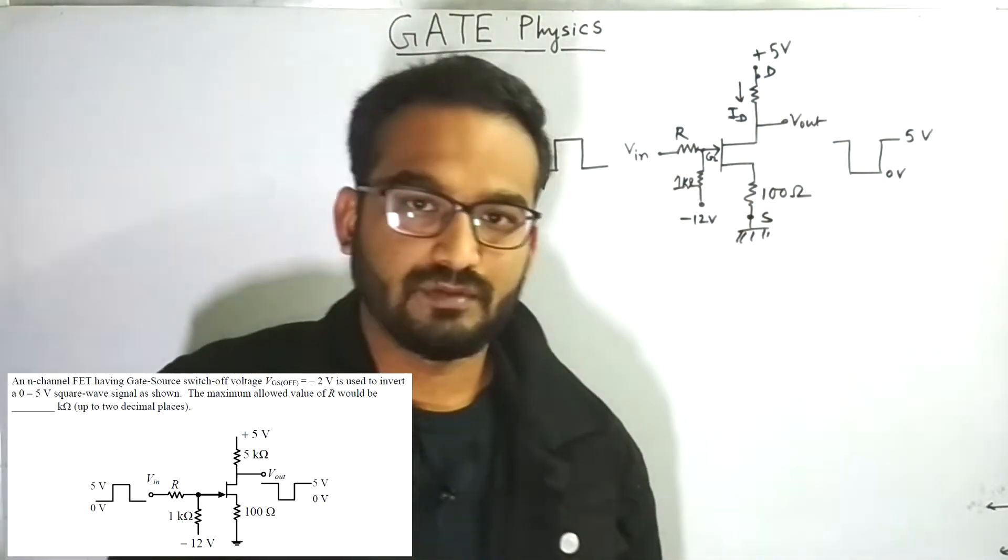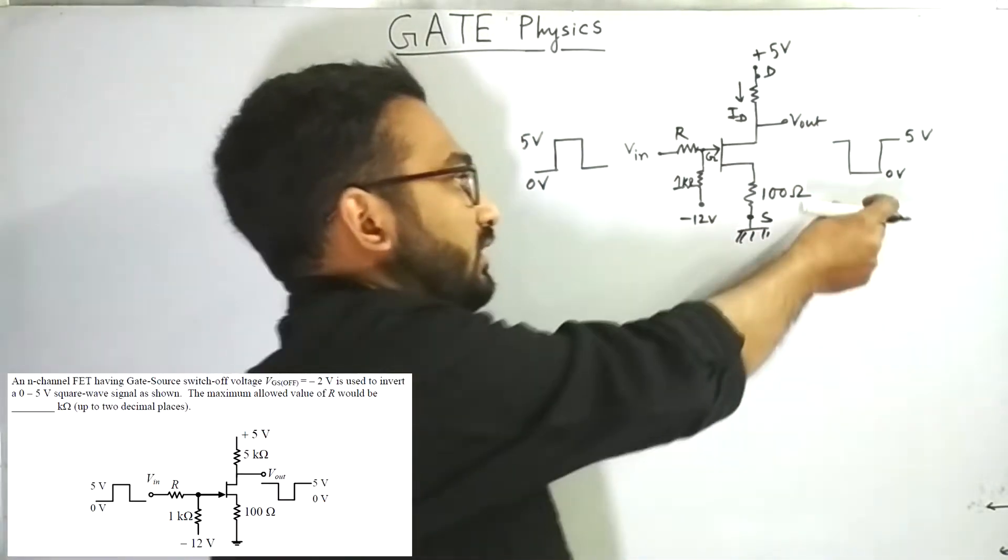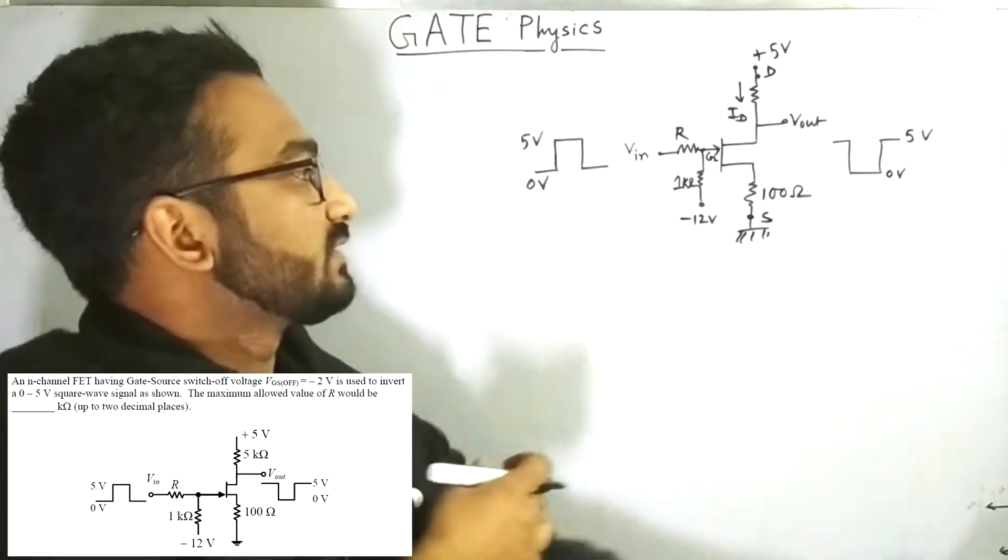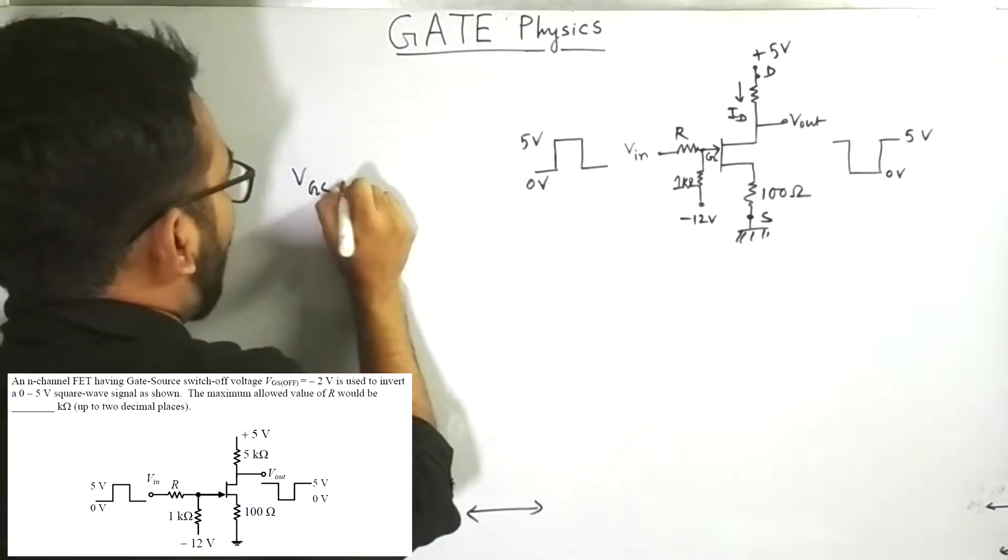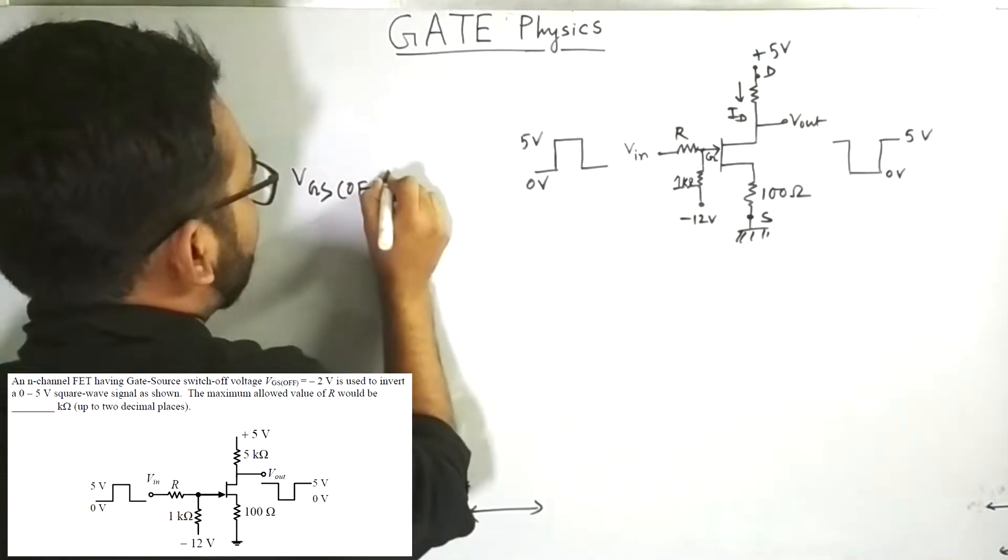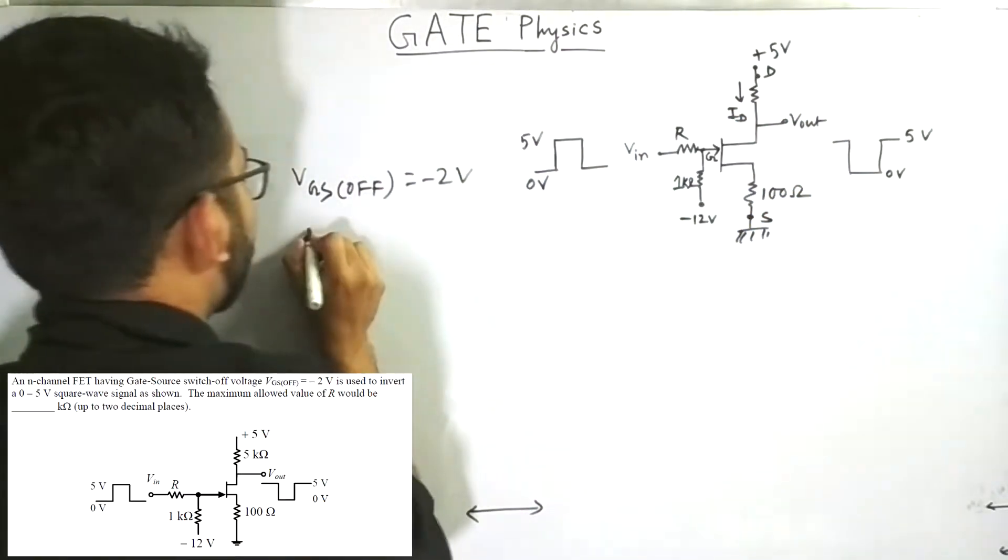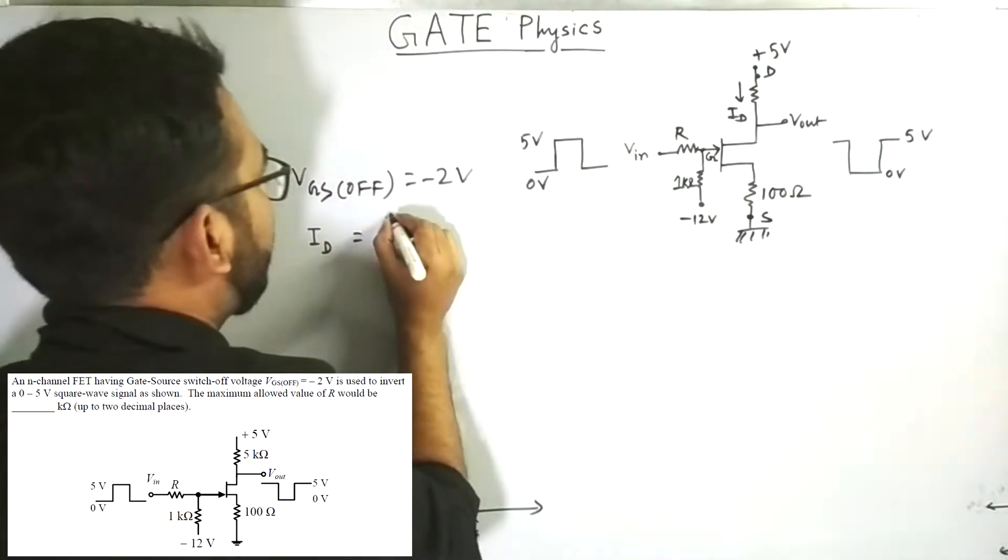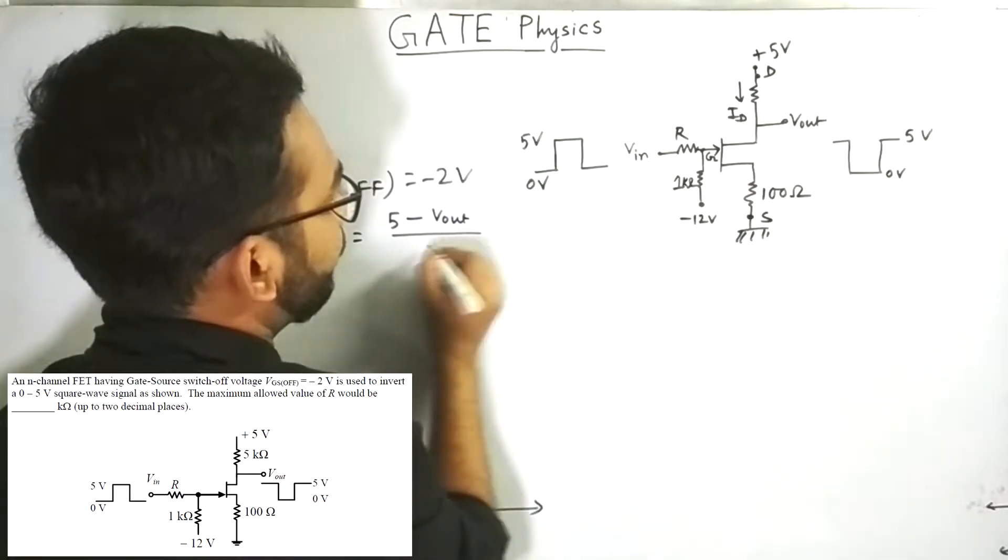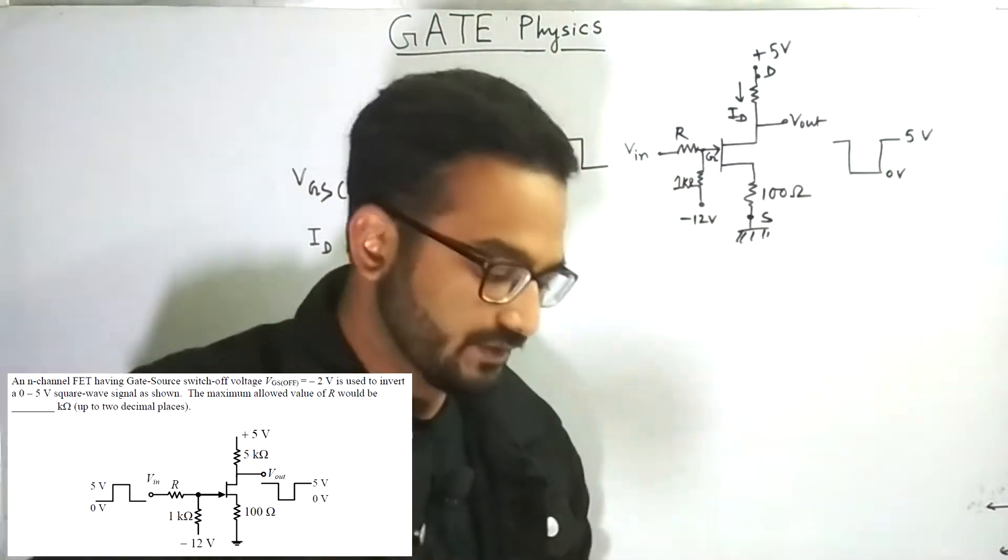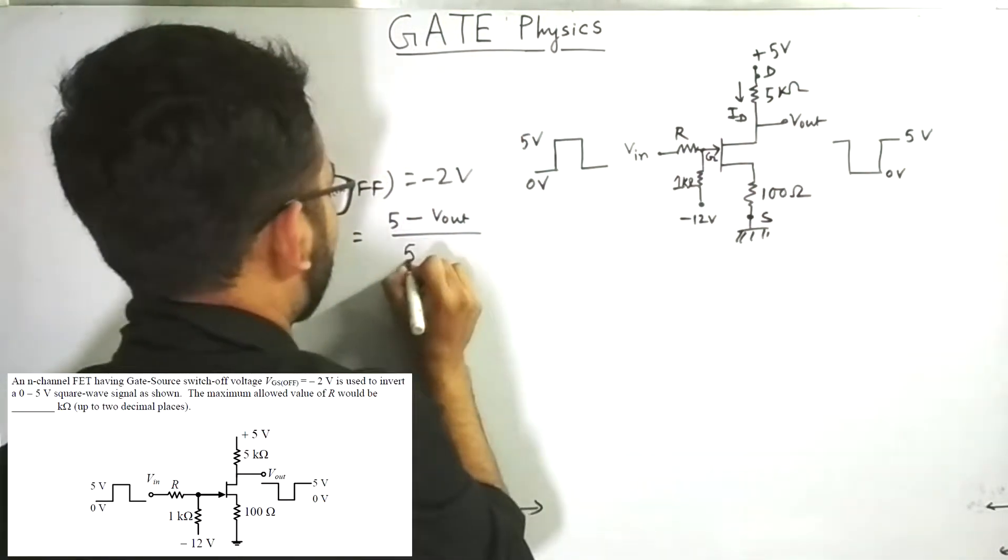If we expect this signal to be inverted at the output, then if VGS OFF equals to minus 2 volts, then if we want to calculate ID, then ID will be equals to 5 minus V OUT by this resistance. What is the value of that resistance? It is given to be 5 kiloohm.